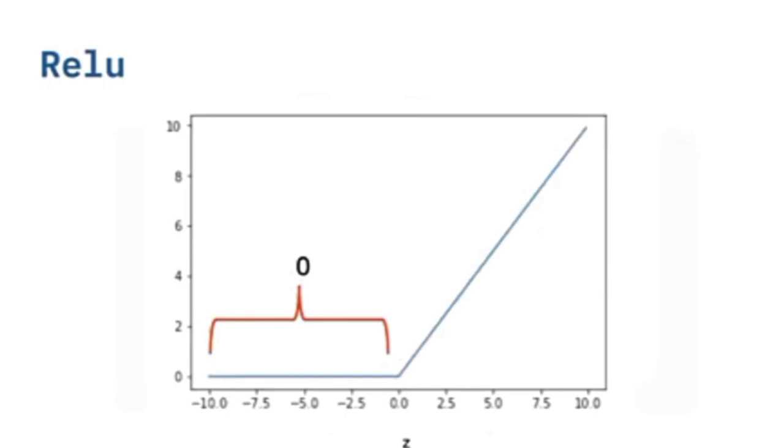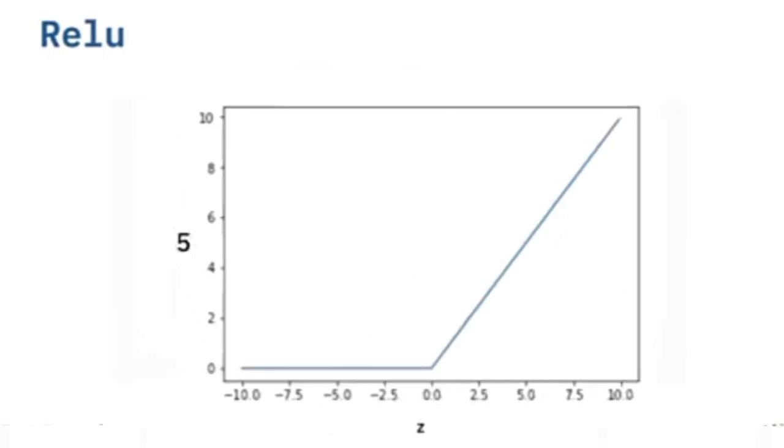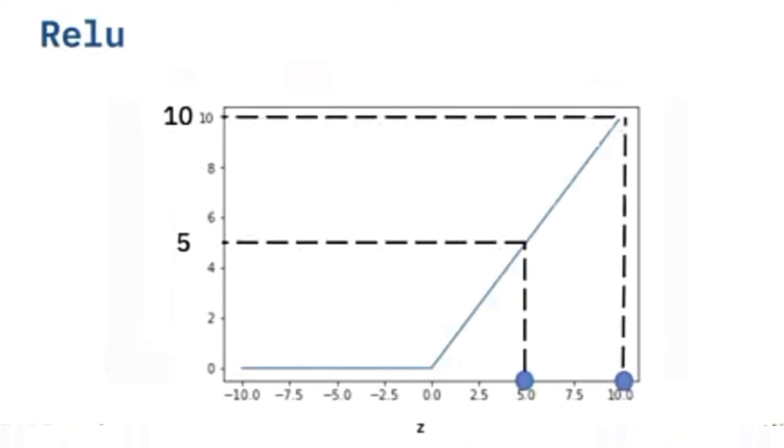RELU is only used in the hidden layers. If the input z is larger than zero, the input of the function will equal its output. If the input z equals five, the output equals five. If the input z equals ten, the output equals ten.